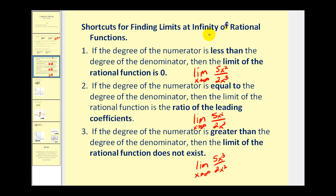There are also three shortcuts for finding limits at infinity of rational functions. The first states: if the degree of the numerator is less than the degree of the denominator, then the limit of the rational function is zero. In this case, the denominator is growing faster, and therefore the limit equals zero.